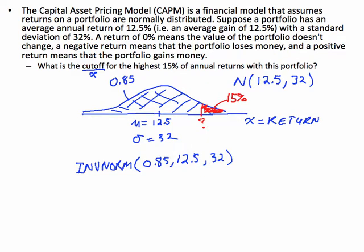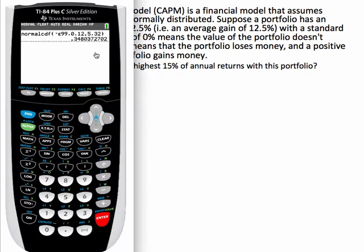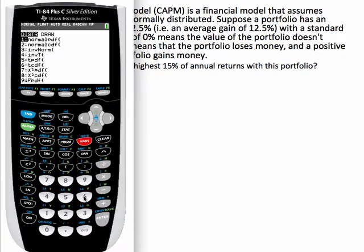So let's go ahead and get our calculator out here. Let's take a look and see what that is. So let's get the calculator up here. We're going to go second, distributions, inverse norm, which is 3. I'm going to put an area of 0.85. I'm going to put in the mean of 12.5, and put in the standard deviation of 32.